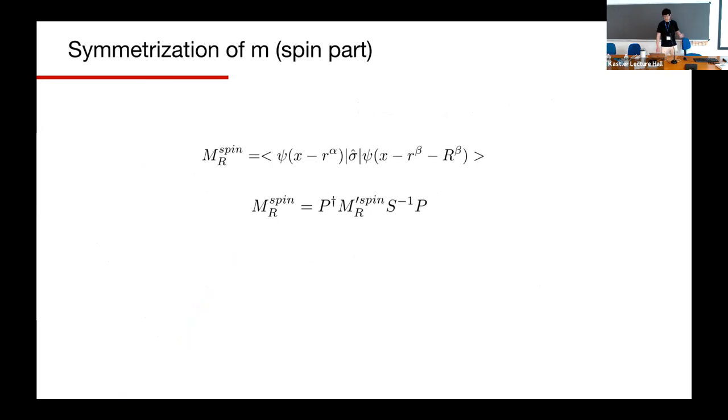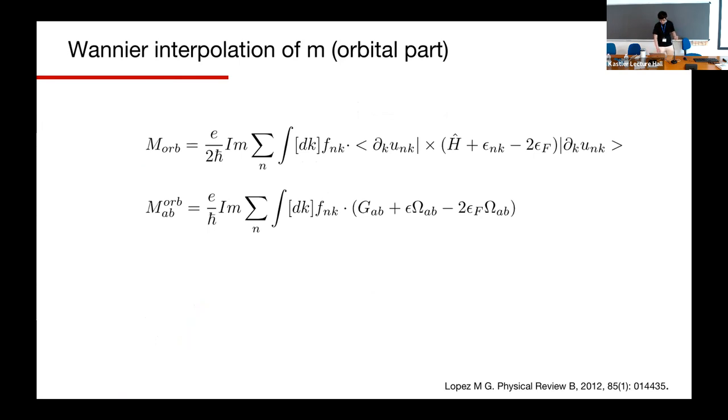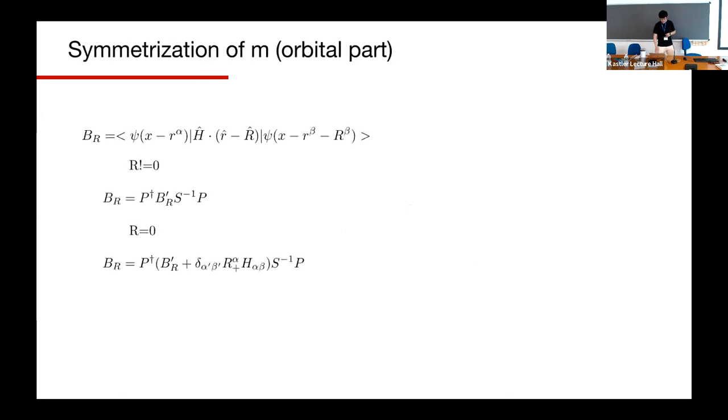And for the magnetic moment spin part, it's very simple. We can use the same formula as the Hamiltonian. For the orbital part, first we need to find the interpolation function as well, like this. The omega we already know and the new term is the G-term. The G-term details involve another matrix which is new for us, the B and the C matrix. We need to know how to symmetrize these two matrices. For the B matrix, we can use totally the same way with the A matrix to symmetrize it. For the C matrix, which is a tensor matrix, so we need two rotation matrices to rotate the vector, each vector column.